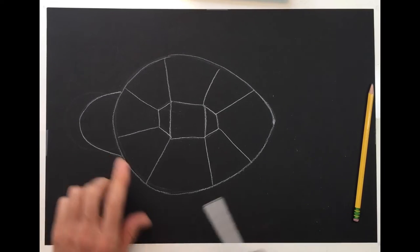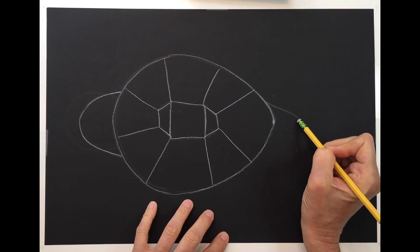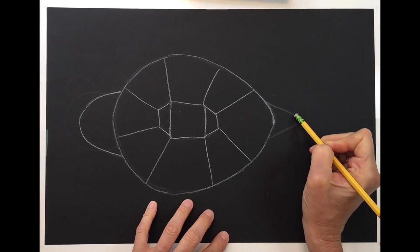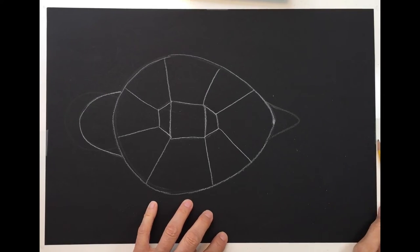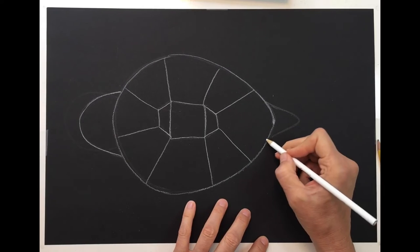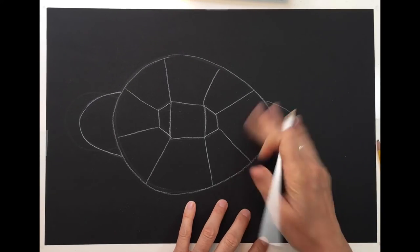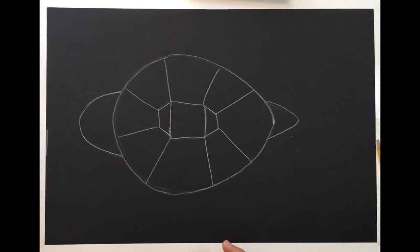So we have our head of our turtle. Now I'm going to put the tail of my turtle on. And it's kind of just a triangle shape. So I make a triangle at the end. When I'm finished, I'm going to trace over it. And now I'm ready for some turtle legs.